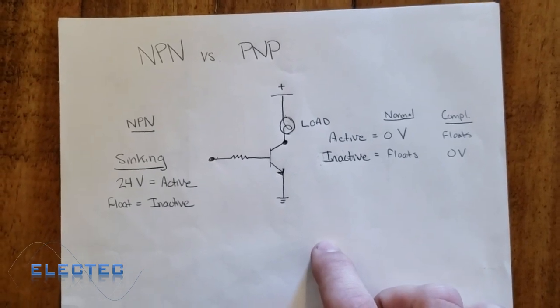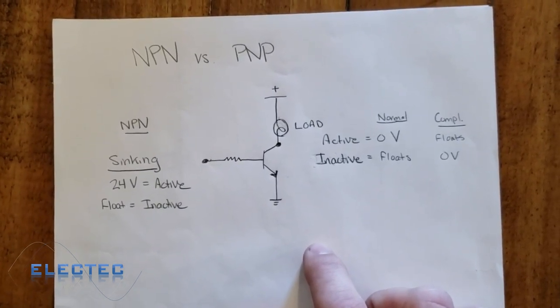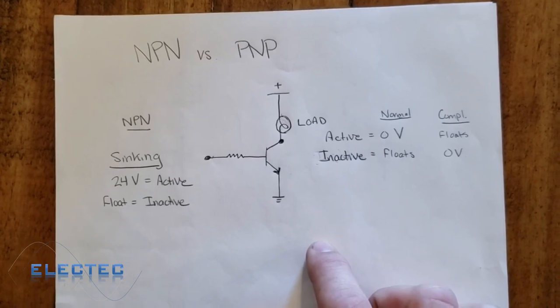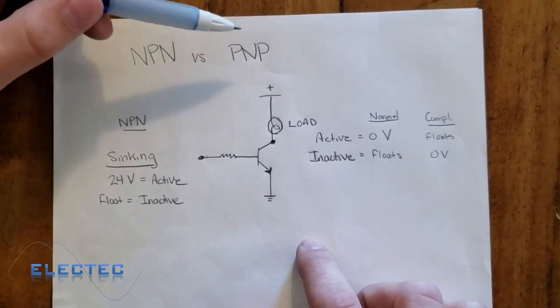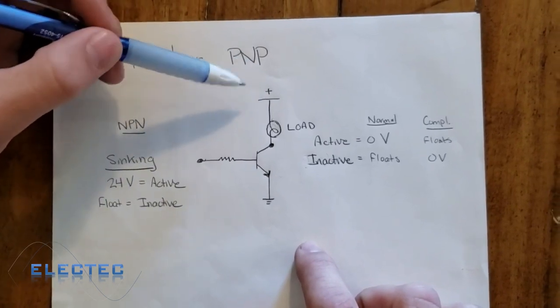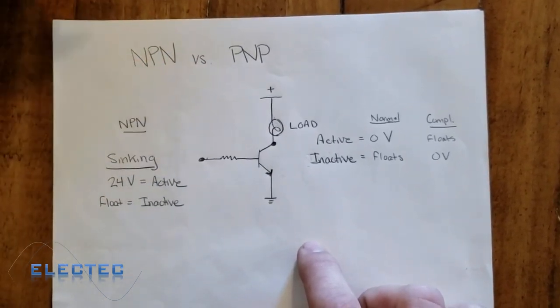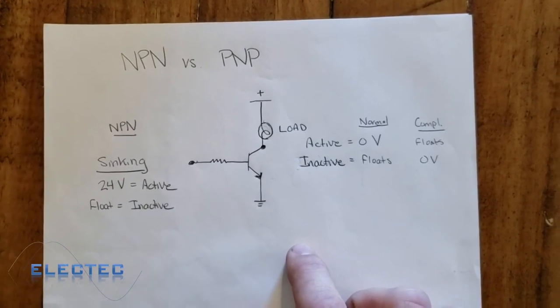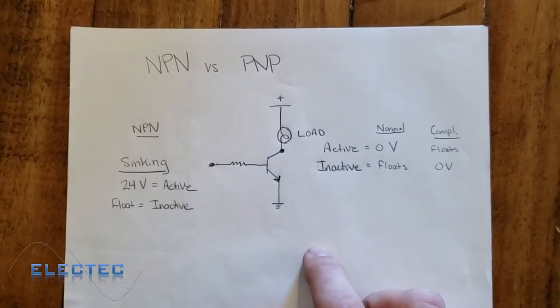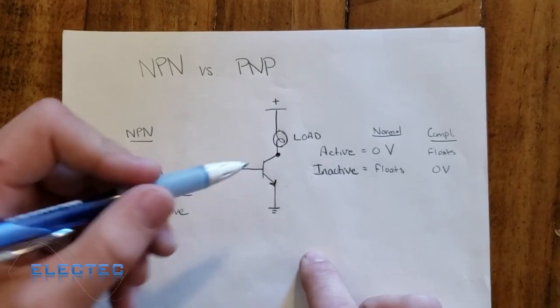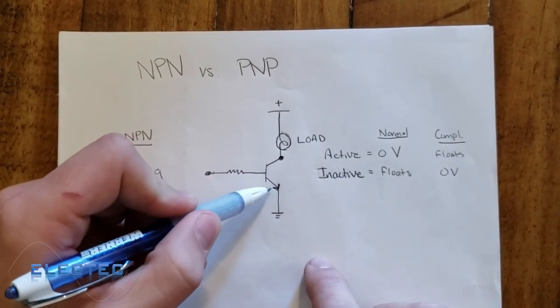What it does is it sinks current. First thing that we have to understand is that we're talking conventional current flow. In conventional current flow, charge flows from positive to negative or from a higher voltage potential to a lower voltage potential.